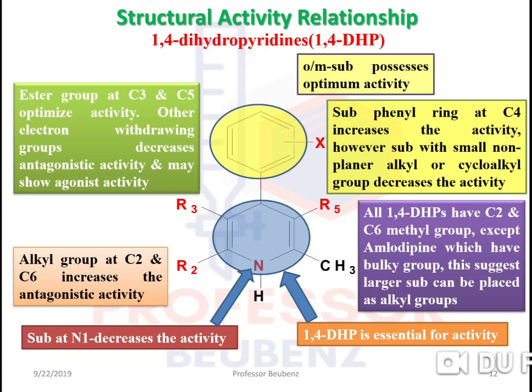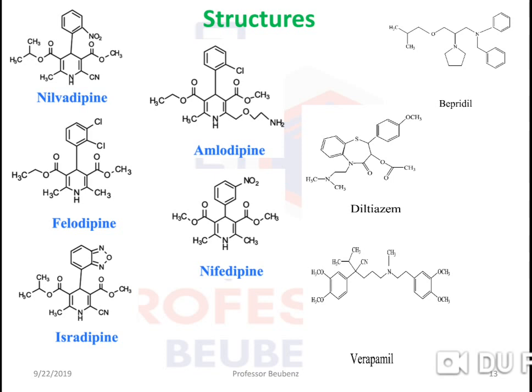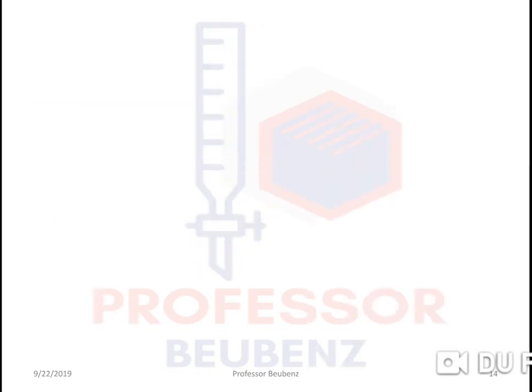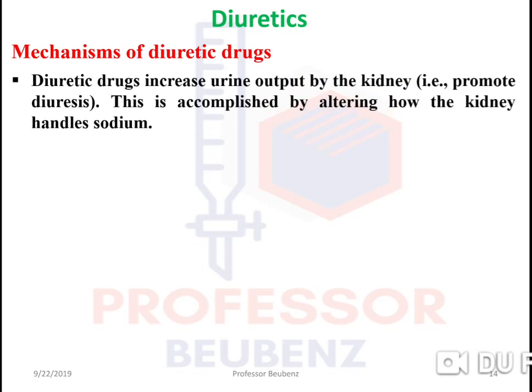Structures of calcium channel blockers include niludipine, felodipine, isradipine, nifedipine, and amlodipine. Verapamil, diltiazem, and bepridil are also calcium channel blockers but do not have SAR because they have independent structures without structural similarities. Diltiazem is a benzothiazepine derivative — remember this. It is not a benzodiazepine; it is a benzothiazepine derivative.